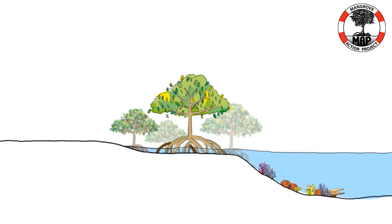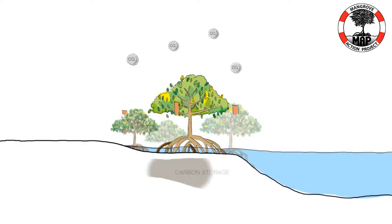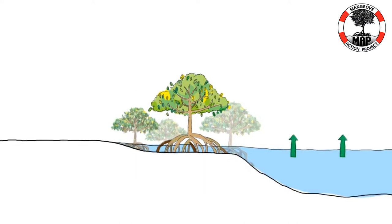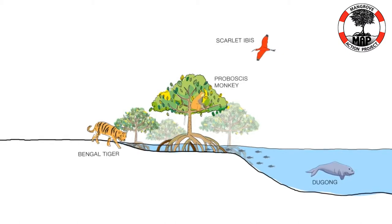Mangroves protect coral reefs from sedimentation, sequester massive amounts of carbon to combat climate change, adapt to rising sea levels, and serve as nurseries and a vital food source for marine life while providing critical habitat for endangered species.